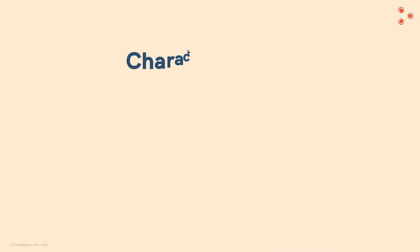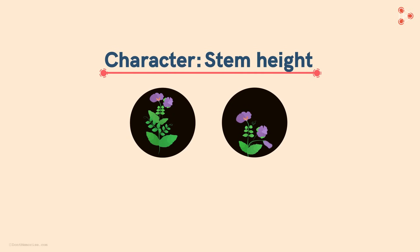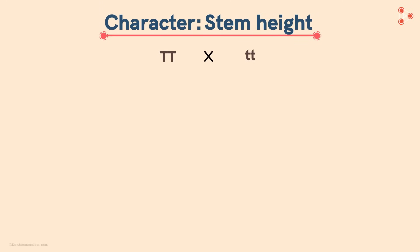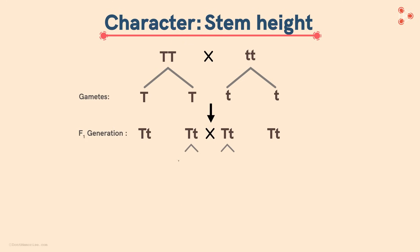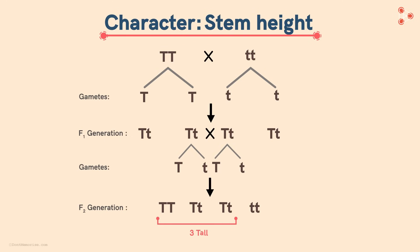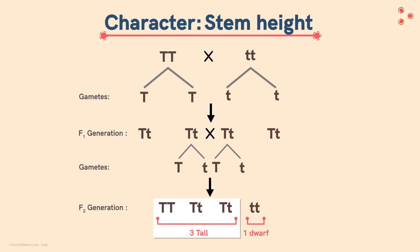Now let's focus back on the cross. This time, let's consider the character stem height in the pea plant — we take a tall and a dwarf plant, both pure lines. On crossing the parental generation, we get offsprings in the F1 generation. When we cross these two plants from the F1 generation, the results show 3 tall plants and 1 dwarf plant — the same ratio that Mendel obtained when flower colour was considered as the character: 3 purple and 1 white flower in the F2 generation.